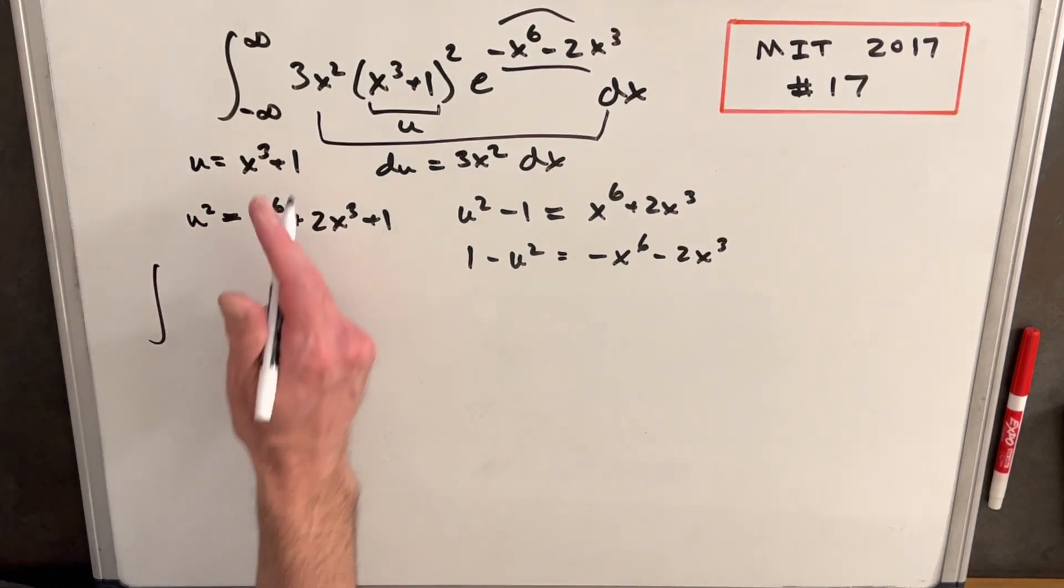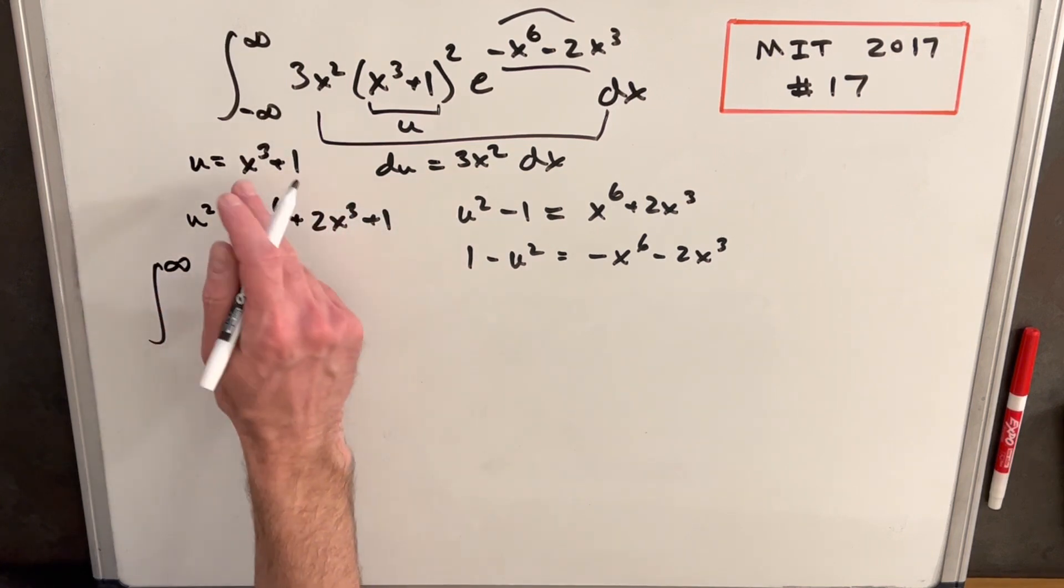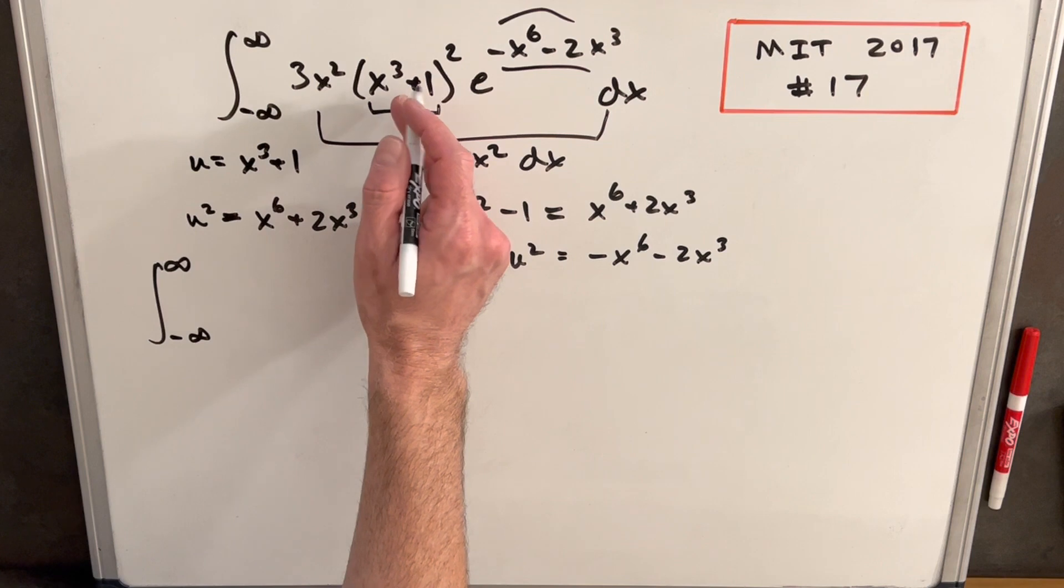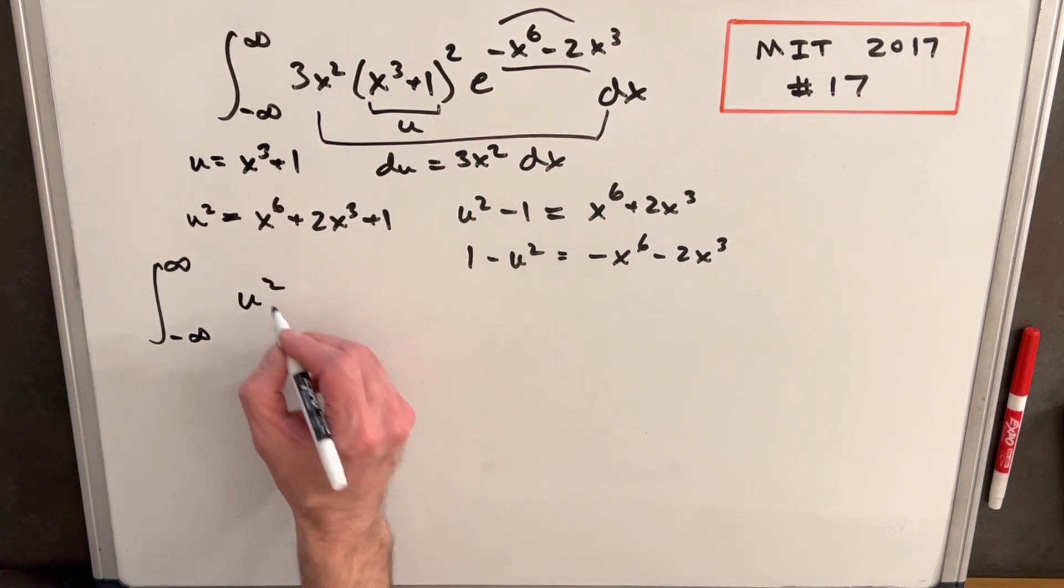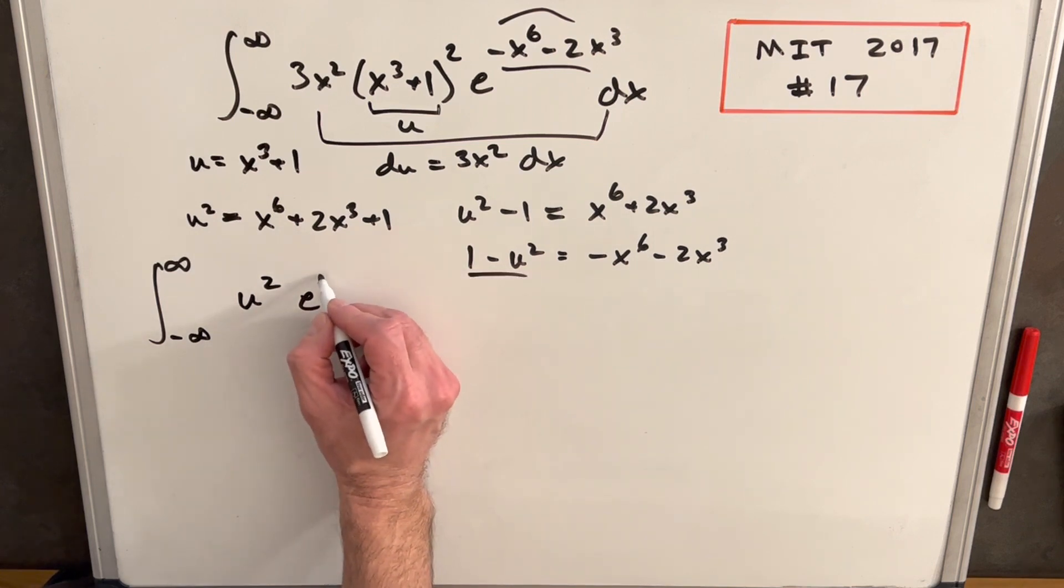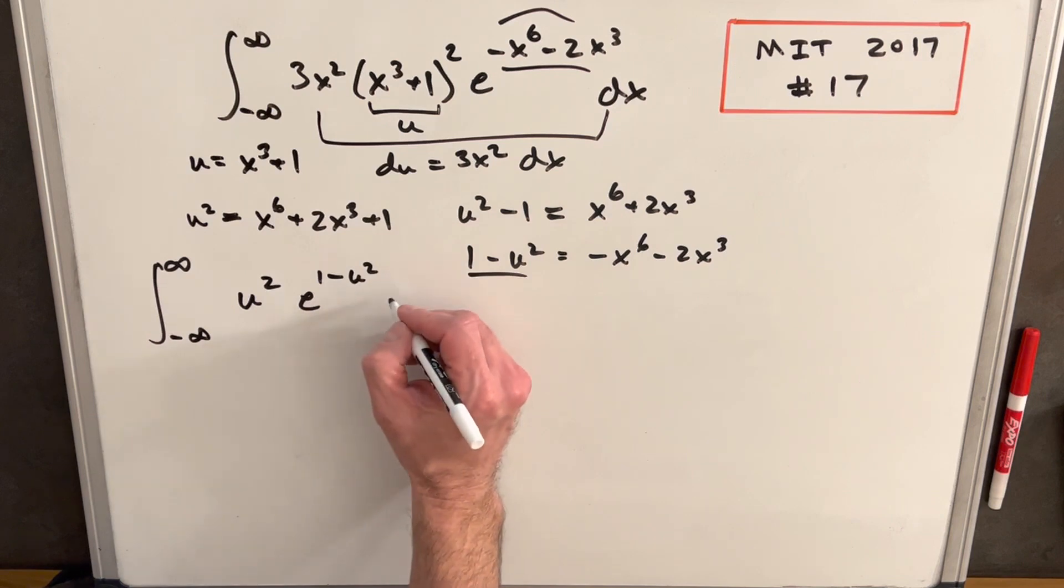Okay, so now we'll go ahead with our substitution. So plugging in infinity, we just have to update our bounds. But infinity cubed is infinity. And negative infinity cubed is still negative infinity. So nothing's changing there. And this piece here is going to be just u squared. Then we're gonna have our exponential. But we determined that this exponent here is just gonna be 1 minus u squared. And then 3x squared dx is just du.